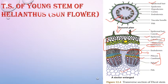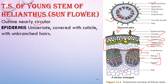Now let's discuss one by one: the TS of the young stem of Helianthus sunflower. The outline is almost circular. The epidermis is uniseriate — a single cell layer. Outside it there is the cuticle, which is a waxy substance that helps in prevention of water loss.